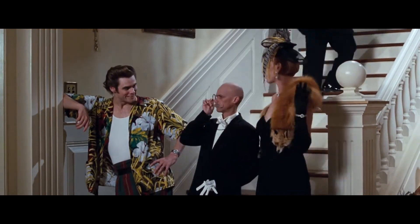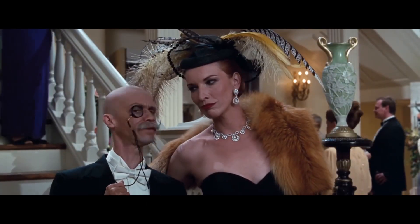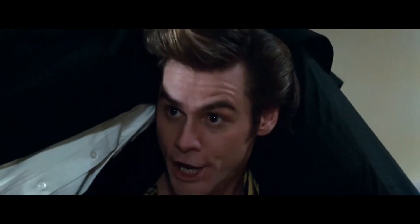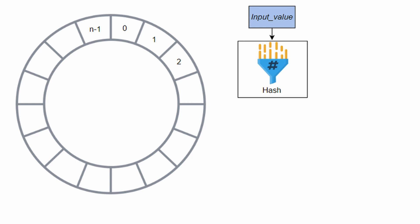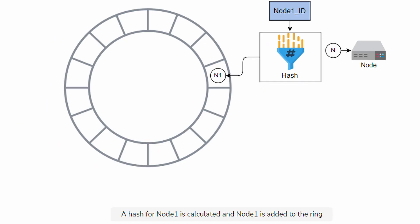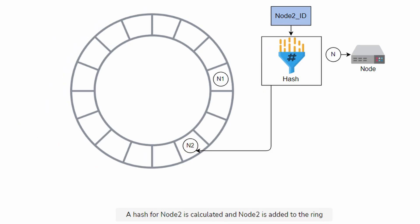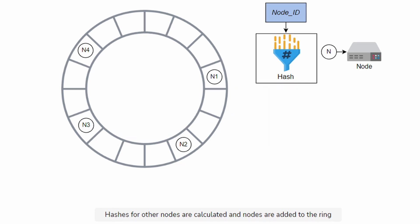Let's instead learn about a fancy but very easy to understand concept that's good to know for all system design interviews. Consistent hashing is based on mapping nodes and requests to a point on a circle. We go clockwise and assign values based on the host identifier. The hash tells us where on the consistent hashing circle the host lives.